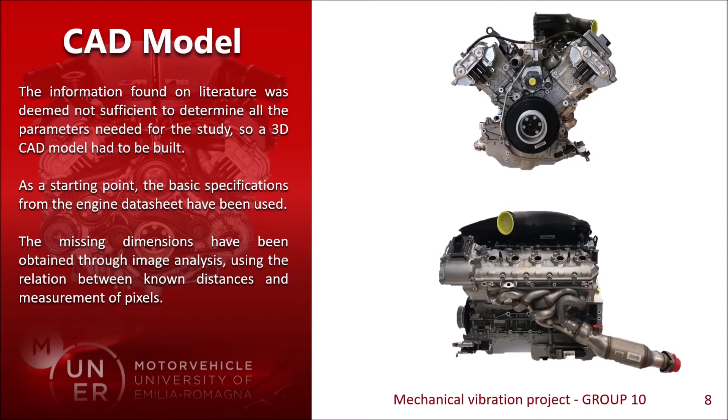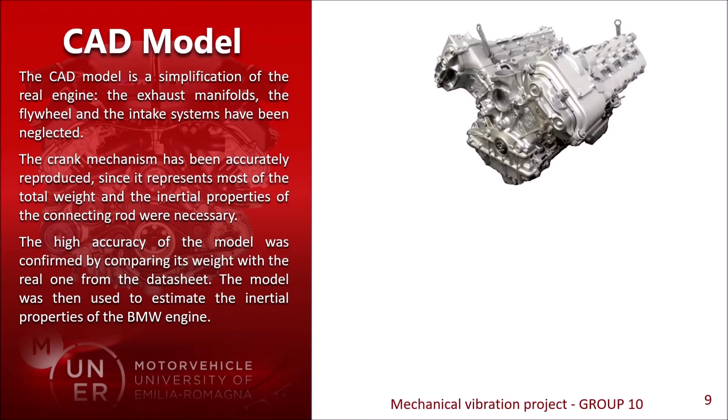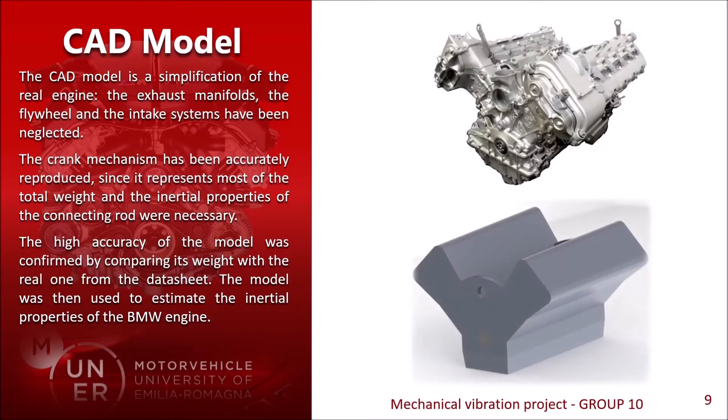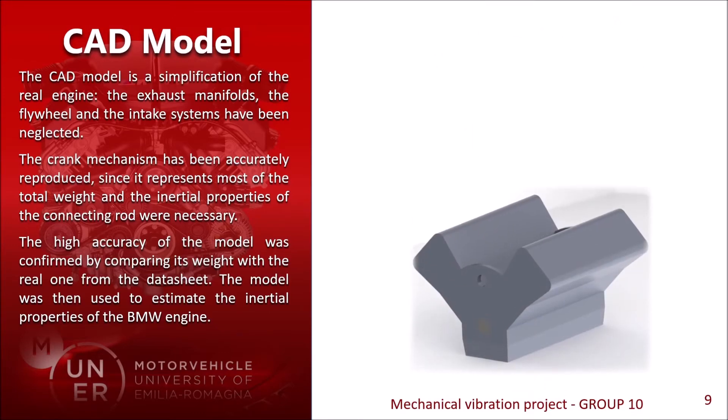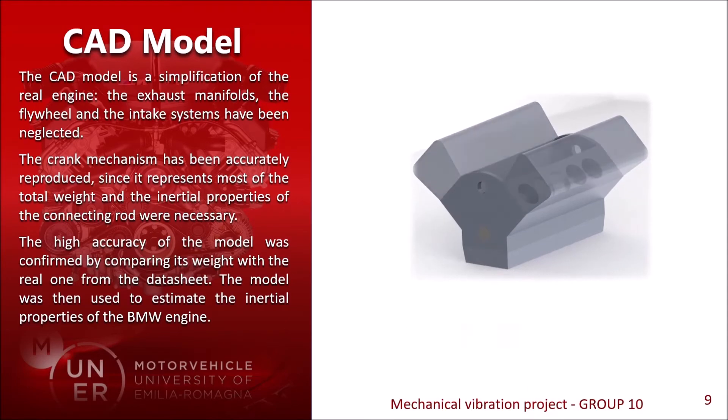We started by making a 3D model of the engine. This was particularly useful to determine the inertia properties of all the components and the coordinates of every point with respect to the centre of mass. To make the CAD model, the dimensions were taken from the engine datasheet, although some were missing and these missing dimensions were measured from analyzing high-resolution images. As a result, we obtained a simplified model that is still very accurate in terms of weight and proportions.